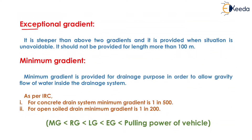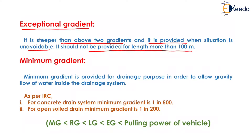The next is exceptional gradient. It is steeper than the above two gradients and is provided when the situation is unavoidable. It should not be provided for a length of more than 100 meters. When the situation is unavoidable and we have to connect two vertical points by a steeper gradient, then we provide the exceptional gradient.